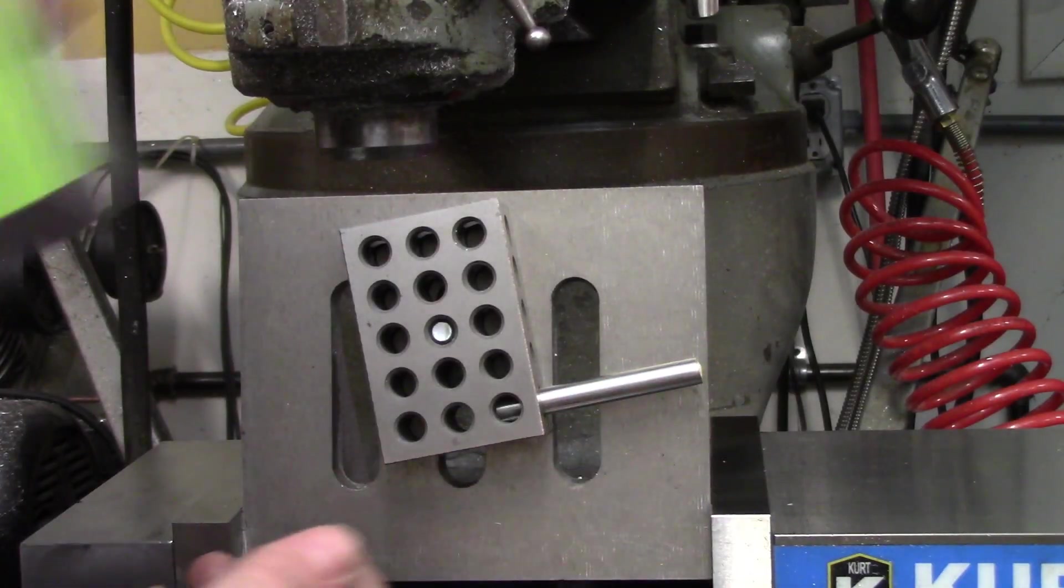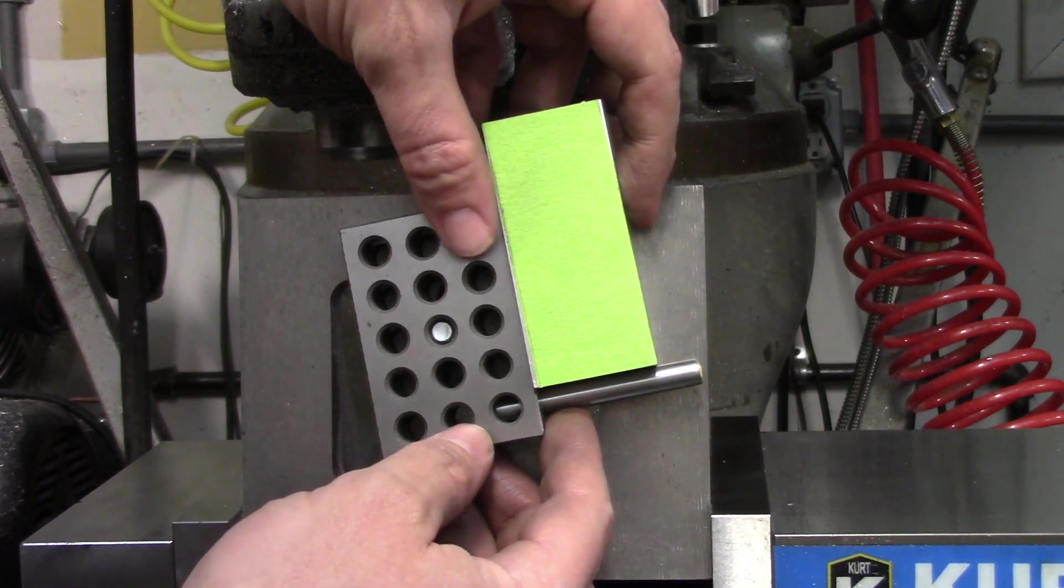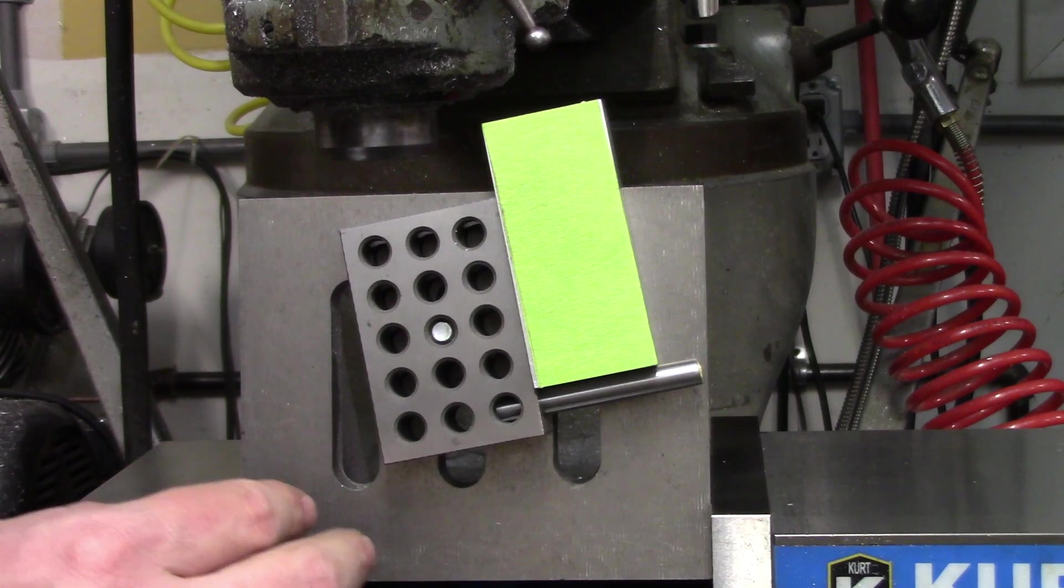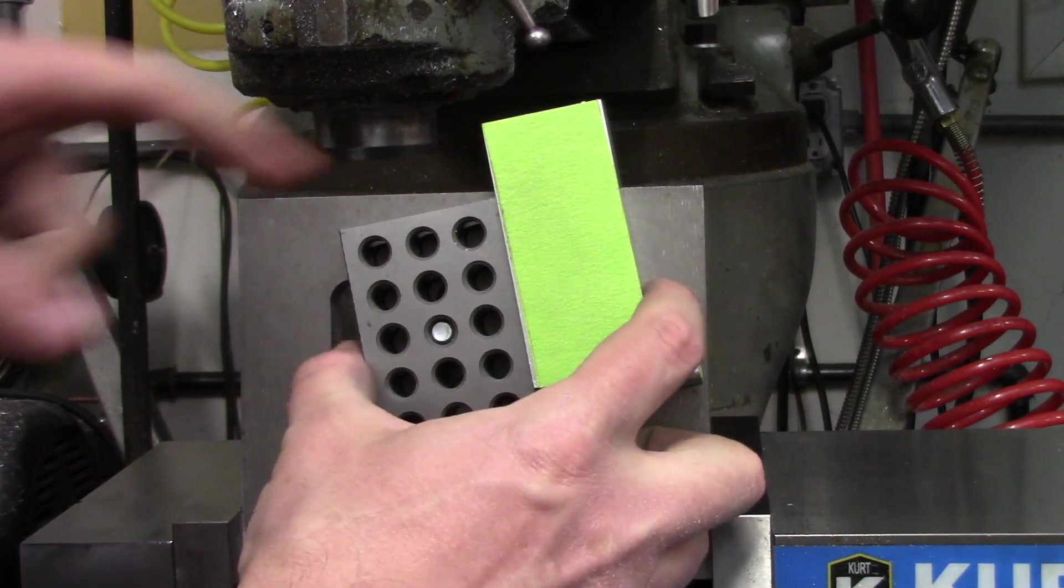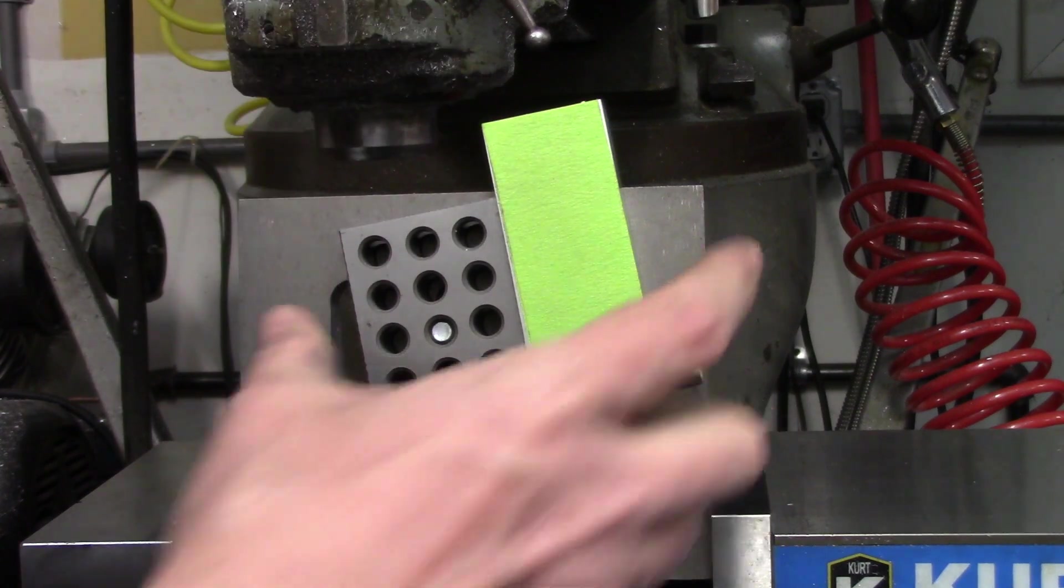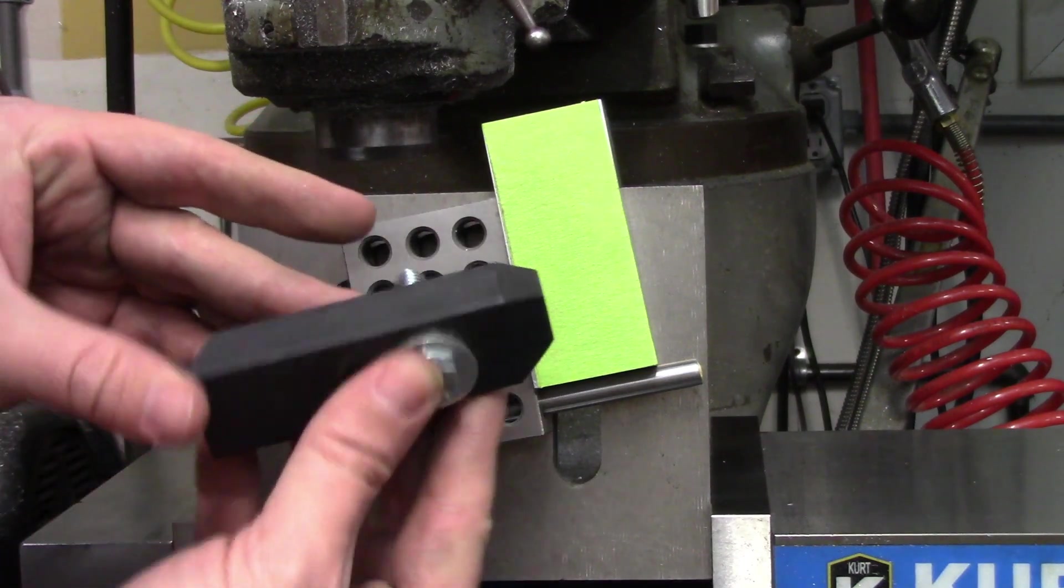I put a pin in the one-two-three block to act as a stop. That's really only there to help hold the part during the setup so I don't have to juggle as much stuff. The important thing is that the part is right up against the one-two-three block. I put a couple of layers of painter's tape on the part because that's a finished surface and I don't want to mar it with the step clamp I'm using.